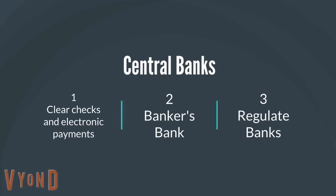What do central banks do? There are five basic functions. The first is that central banks clear checks and electronic payments. The Federal Reserve clears more checks and electronic payments than any other entity in the country. If you swipe your debit card at Chipotle and they use one bank and you use a different bank, the Federal Reserve moves the money between banks and charges people for moving it, like a business.